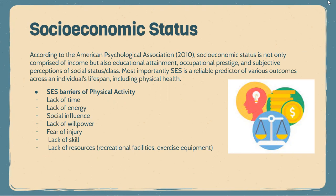Here are some of the low SES barriers to physical activity, which include, but are not limited to: lack of time, lack of energy, social influence, lack of willpower, fear of injury, lack of skill, and lack of resources such as recreational facilities and exercise equipment. Many Americans classified as low SES more often have physically demanding occupations requiring longer hours, including evening and night shifts — therefore they have less leisure time and less energy for physical activity. Also, low SES individuals live in communities not designed for physical activity, with no safe area or accessible facility available.